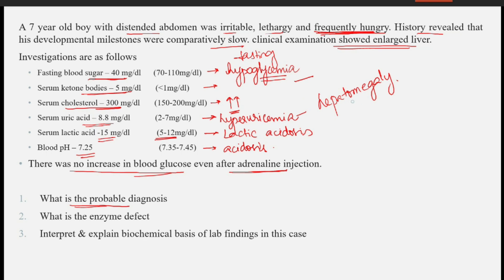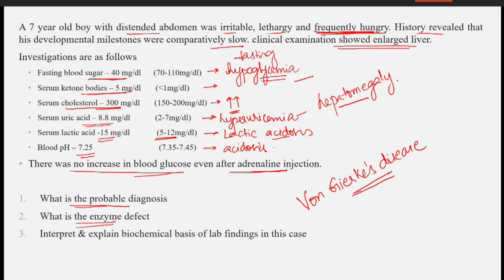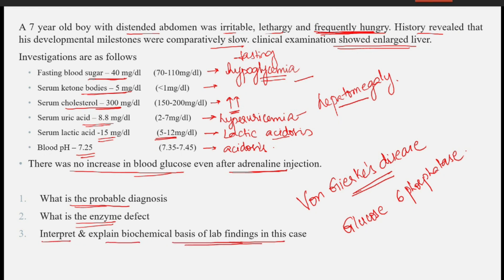What is the probable diagnosis? Hypoglycemia, hyperuricemia, hepatomegaly, and lactic acidosis all point towards Von Gierke's disease. All the features given in this clinical case point towards Von Gierke's disease. The enzyme defect is glucose-6-phosphatase — this is the enzyme that is deficient in these patients.